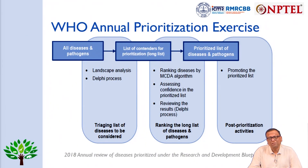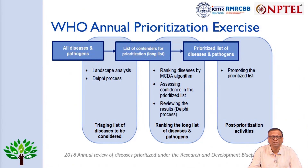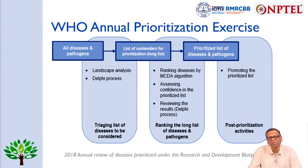How did WHO prioritize these diseases? First, all diseases and pathogens were listed, then a landscape analysis and Delphi process were conducted taking opinions from various experts and stakeholders. Triaging produced a long list of contenders for prioritization. Diseases were ranked by an algorithm and confidence in the prioritized list was assessed through a review Delphi process, resulting in a final ranked prioritized list of diseases and pathogens.